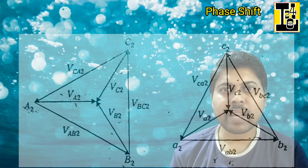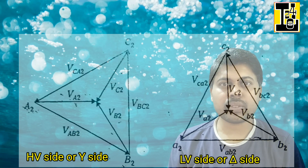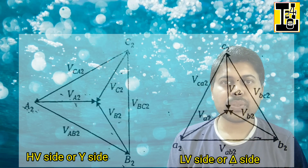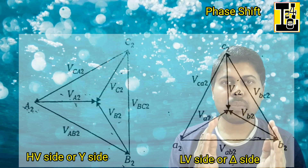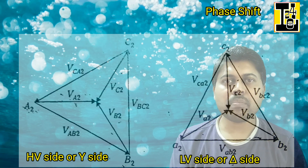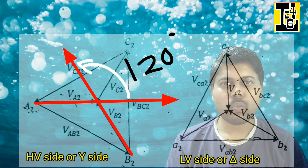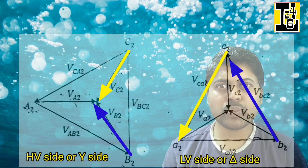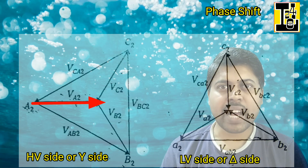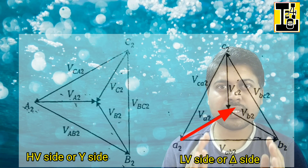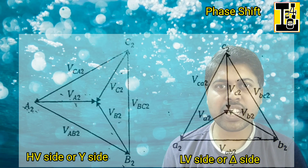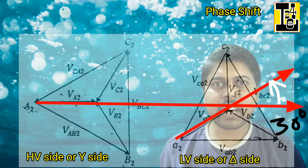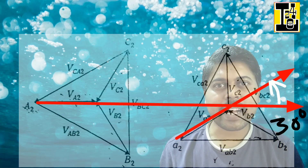The negative sequence voltage phasors can also be drawn easily. Using the dot convention, VA2 is in phase with VAB2. We then follow the same procedure as for the positive sequence phasors, keeping in mind that VB2 leads VA2 by 120 degrees and VC2 leads VA2 by 240 degrees. From the completed diagram, it can be observed that VA2 — the negative sequence voltage at H1 — lags VA2, the negative sequence voltage at X1, by 30 degrees. Hence, it is proved that the negative sequence line voltages at the star side (HV side) lag the corresponding voltages at the delta side (LV side) by 30 degrees.